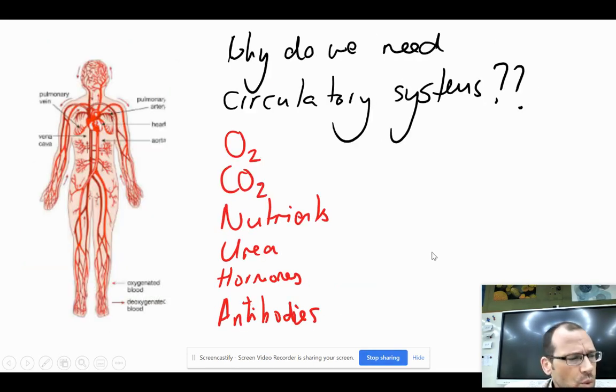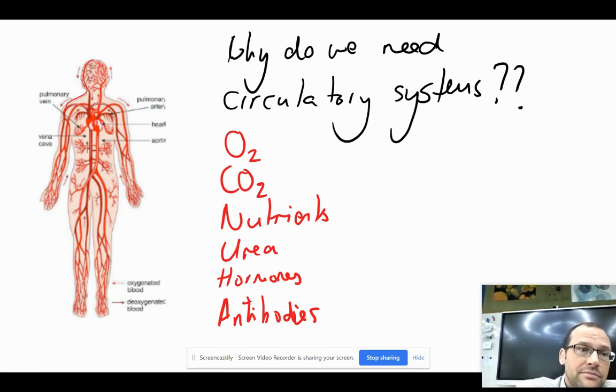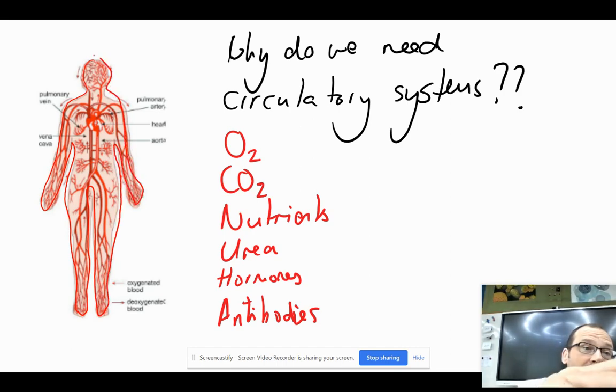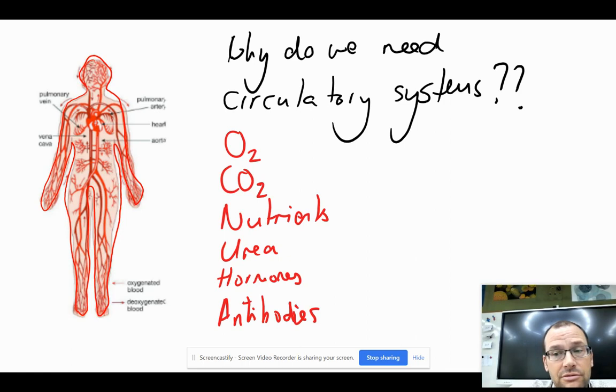Why do we then - human beings, mammals, or larger organisms - need that circulatory system? Well, because we are made up of trillions of cells. Our surface area to volume ratio is very, very low.